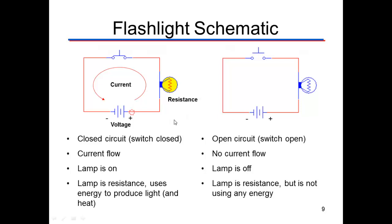Current only flows when the switch is closed. When it's closed, we have a closed loop and current can flow through, driven by the power of the battery. In the open circuit, no current will flow because it's open and the light bulb is not illuminated. The lamp is still the resistance but it's not using any energy because there's no current flowing.